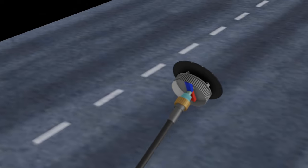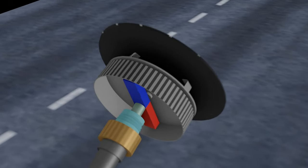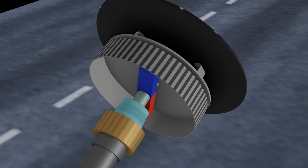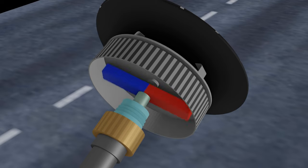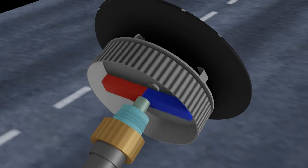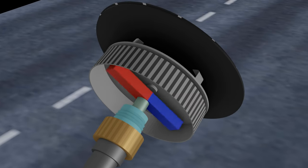As the speedometer cable rotates, it turns the magnet at the same speed. The spinning magnet creates a fluctuating magnetic field inside the speed cup and, by the laws of electromagnetism, that means electric currents flow inside the cup as well.